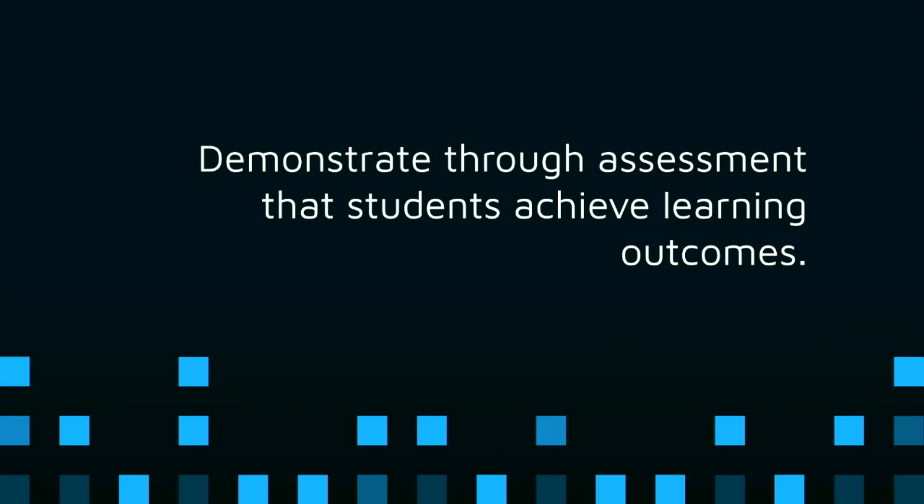First of all, I want to talk about what is assurance of learning. The key thing we're trying to get across is that we need to make sure students are actually learning what we want them to learn, or that they achieve the learning outcomes that we set. At University of Sydney, we set learning outcomes for our units. We want to demonstrate this through assessment, and we actually have requirements at the University that we assure that we do this.